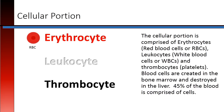The cellular portion is comprised of erythrocytes, which are red blood cells; leukocytes, which are white blood cells; and thrombocytes, which are platelets. Blood cells are created in the bone marrow and destroyed in the liver. 45% of the blood is comprised of cells.